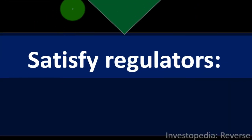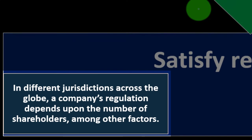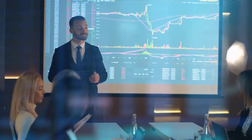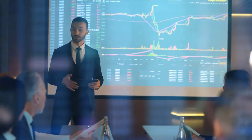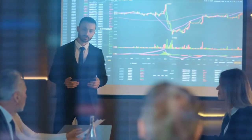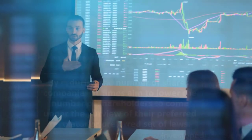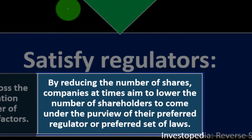A third advantage is satisfying regulators. In different jurisdictions across the globe, a company's regulation depends upon the number of shareholders, among other factors. By reducing the number of shares, companies sometimes aim to lower the number of shareholders to come under the purview of their preferred regulator or preferred set of laws.